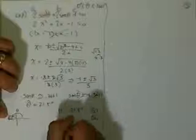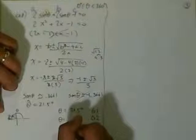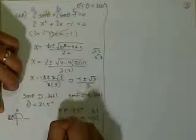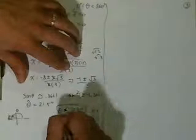So it's going to be 180 minus that. 180 degrees minus 21.5 is 158.5 degrees. 21.5 degrees and 158.5 degrees.